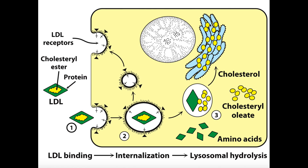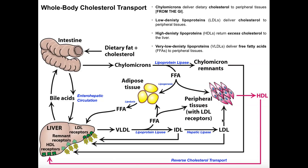Once the cholesterol is in the smooth ER, the cell can do anything it wants with it. It can process it into other types of molecules, or send it to the plasma membrane of the cell — which is mostly what a skeletal muscle cell will do. This is how a cell receives cholesterol: from an LDL in the form of cholesterol esters, but it has to internalize the entire lipoprotein. That's LDL.